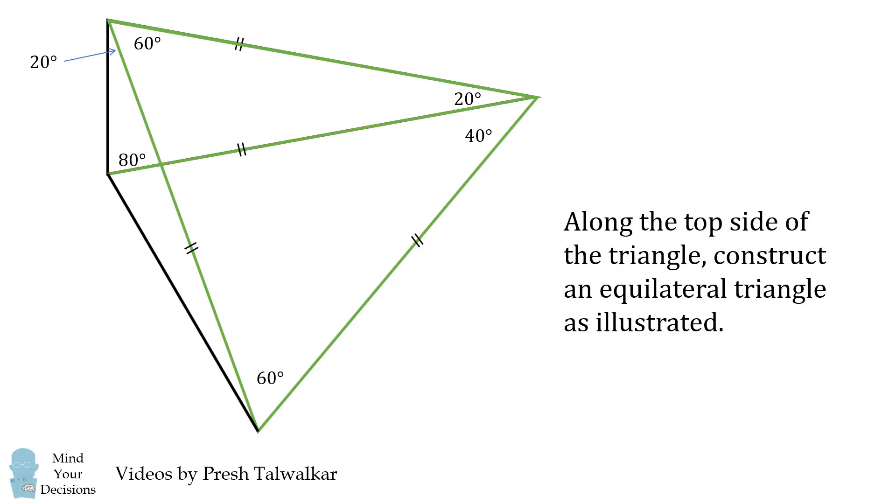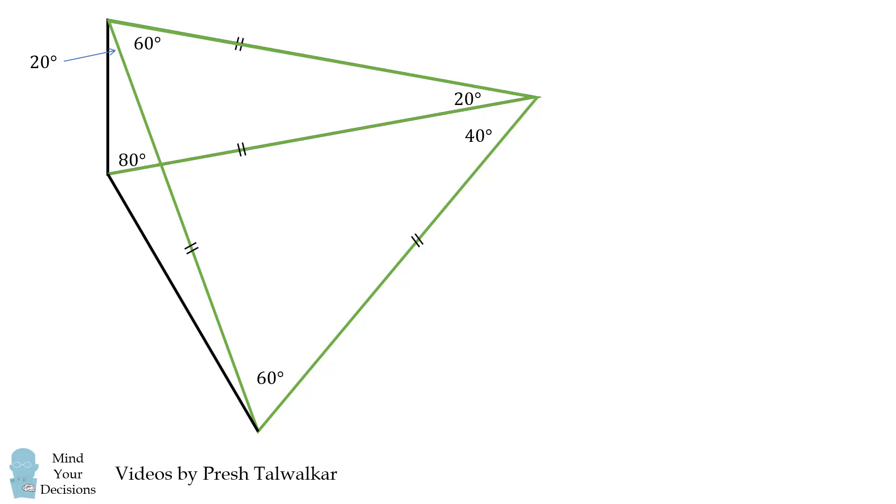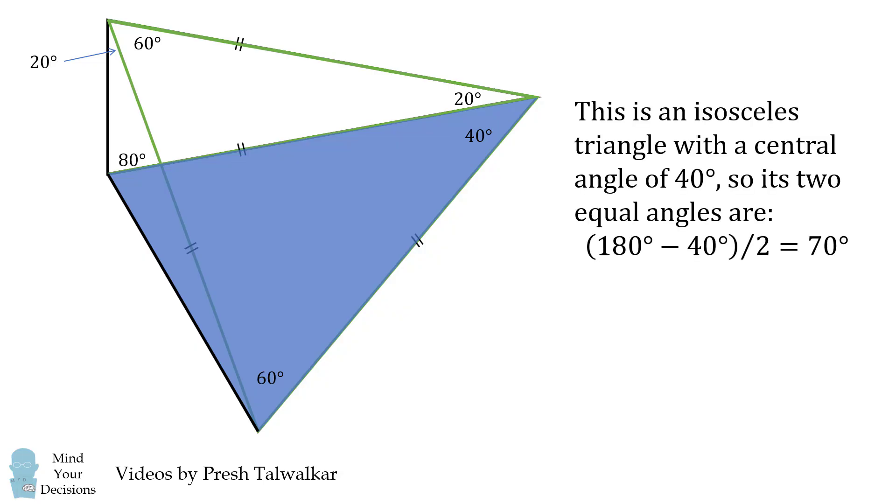Now let's connect these two points and furthermore we'll focus on this triangle. Now two of the side lengths are equal to each other because they both have the same length as a green side. So this is an isosceles triangle with a central angle of 40 degrees, which means its other two equal angles are 180 minus 40 which equals 140 divided by 2 which is 70 degrees.